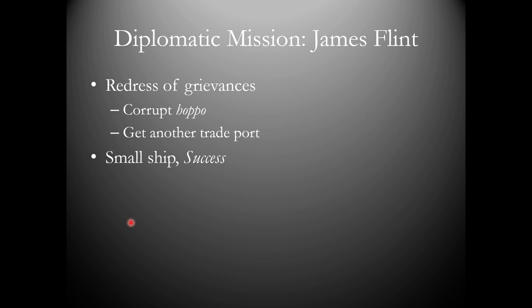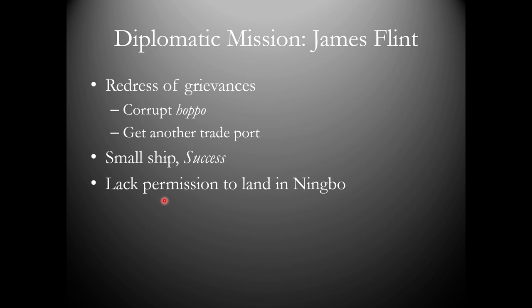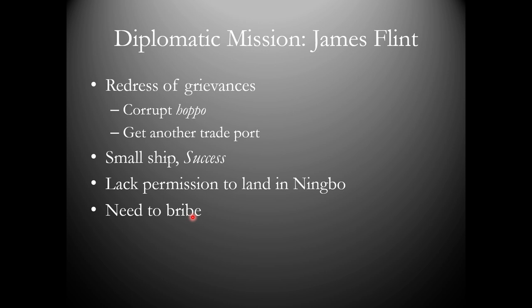He sails north up the coast of China. Coastal winds generally go one direction in one season. He gets to a place called Ningbo and they tell him: 'You must leave, you cannot stop here, we will not trade with you.' He says he needs to trade; they say go away. He can't go south, so he sails on, gets to the city outside the capital, and needs a bribe — basically $200,000 in modern money — just to see the emperor, which he reluctantly pays. The emperor was appreciative: 'Thank you for reporting the corrupt minister, I will deal with that. But you're not going to get another trade port. And because you are accusing the minister, you must travel back to the province with my inspector.'